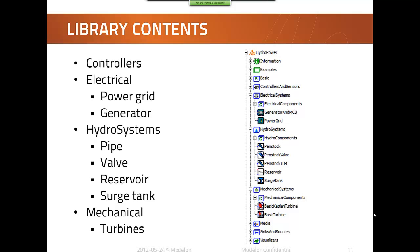Under mechanical you will actually find the different turbines. So there are two different turbines, both are table based, so you specify efficiencies and so on. Basic Kaplan turbine is used for modeling Kaplan turbines, and the other one, basic turbine, is used for modeling for example Pelton or Francis turbines. And otherwise we have also a little bit of visualizers that you can use to simplify the post processing process. You have sinks and sources. The media, it's only a water media that you can use.